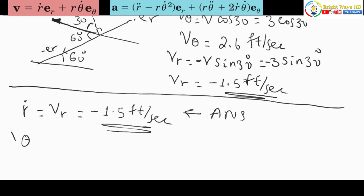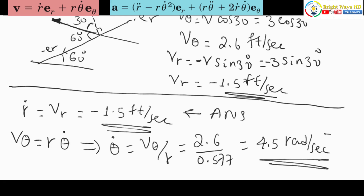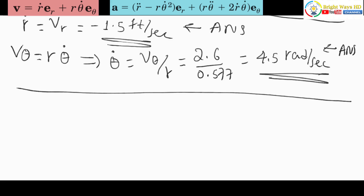For theta-dot, we know that velocity in the theta direction equals r times theta-dot, which means theta-dot equals vθ over r. That gives 2.6 over 0.577, and theta-dot equals 4.5 radians per second.